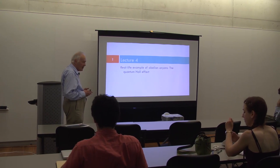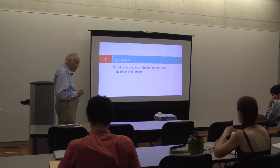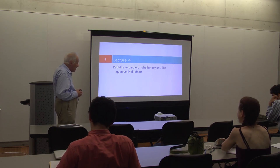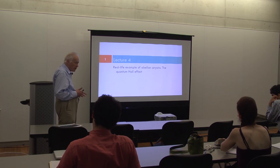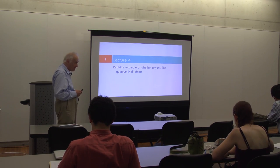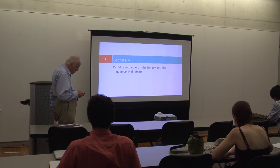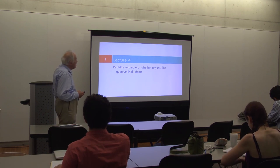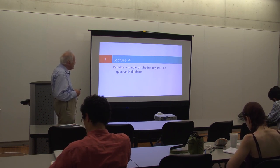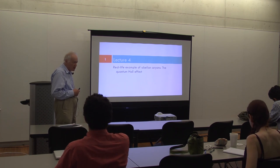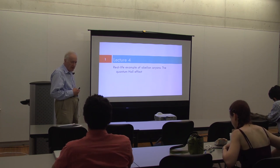The Kitaev-Toric code is basically a theorist model written on paper, and not as far as I know actually realized in real-life experiments. The quantum Hall effect, by contrast, is very much a real-life experimental system. It's been around now in integral form since 1980 and in fractional form since 1983.